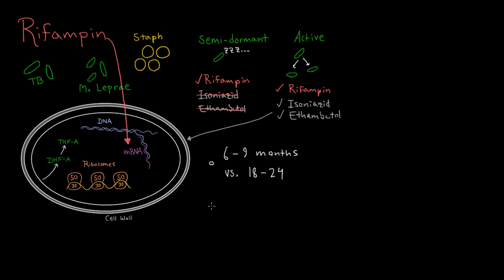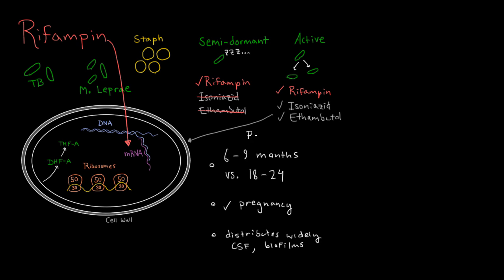There are a couple of other aspects of rifampin that make it a great drug. One is that it's okay in pregnancy, and another is that it distributes very widely. In particular, it can get into the CSF, which is helpful for treating any CNS infection. And then there's also the fact that it penetrates very well into biofilms, and that is precisely why it's good for treating staph infections of prosthetic valves or prosthetic joints. So these are kind of like the selling points of rifampin.